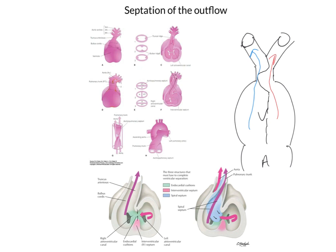I'll use some diagrams to give you a much clearer representation of that. Looking at the top left-hand diagram in pink, we've got various stages of development. Here we're looking at a stage where we've got the primitive ventricle, the truncus, and then those branches feeding into the aortic arches. What we've got in the middle that I'm highlighting is a cross-section through the truncus arteriosus.